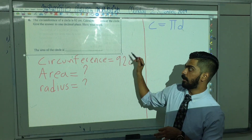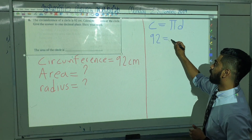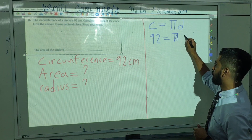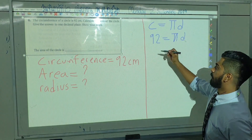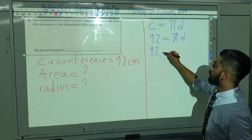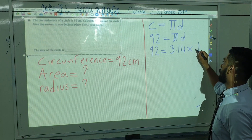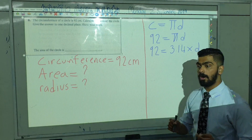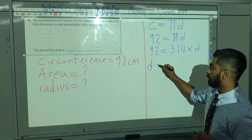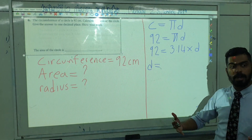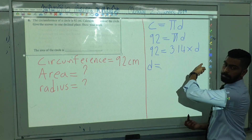How much is the circumference of the circle given? We have 92 = πd. What is the value of π? Very good — so 92 = 3.14 × d. Now, how can we find d? We know 92 = 3.14 × d, so we solve for d (the diameter).